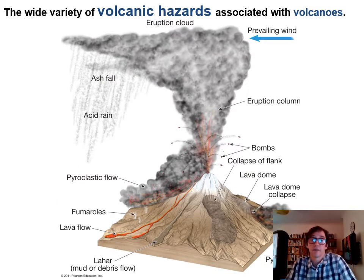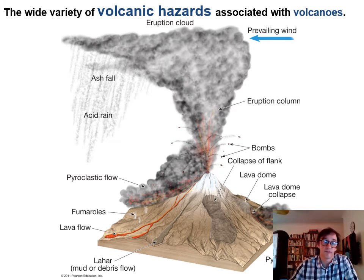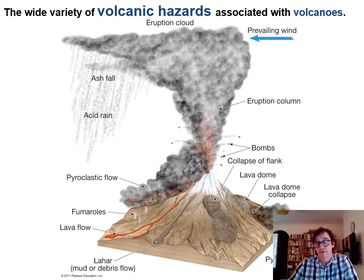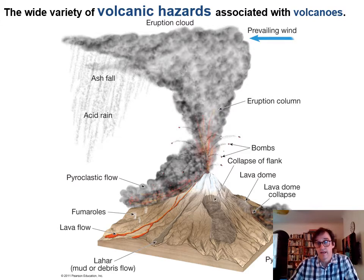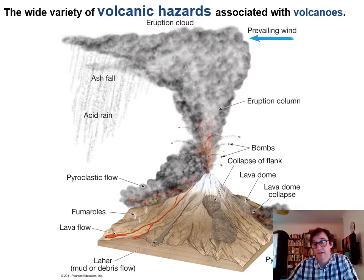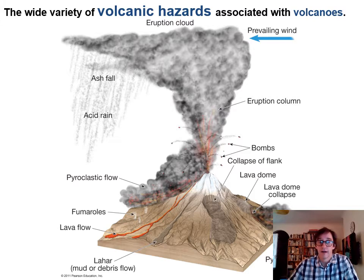That's summarised in this diagram of volcanic hazards. You can see ash fall, poisonous gases — which includes sulfur dioxide producing acid rain — pyroclastic flows flowing down the mountain at great speed, lava flows, volcanic bombs (another larger type of pyroclastic material), and lahars here as mud or debris flows.